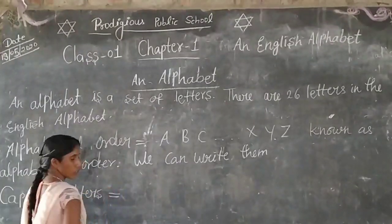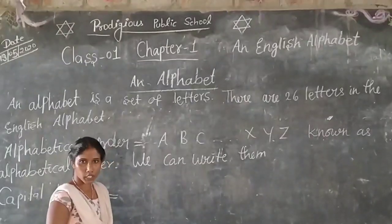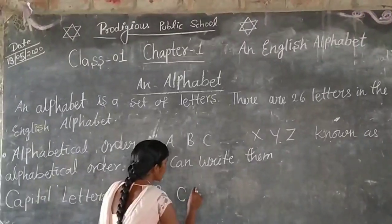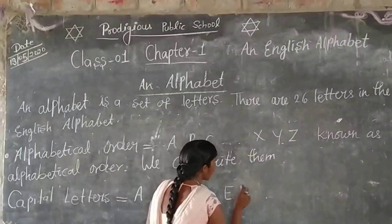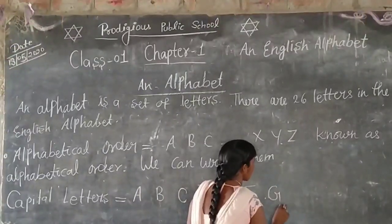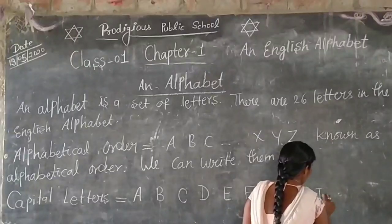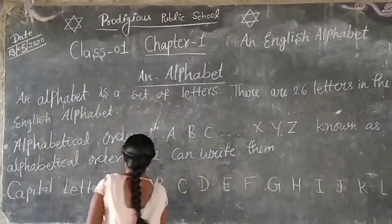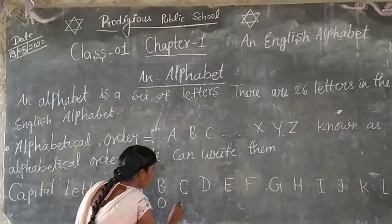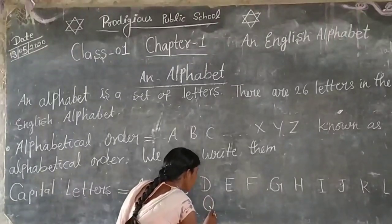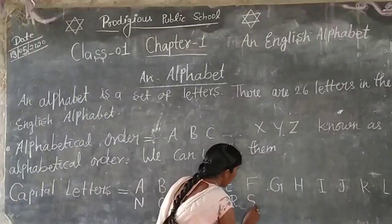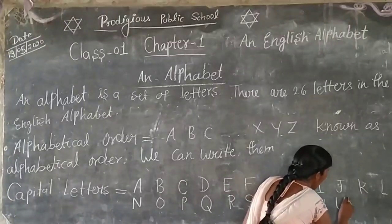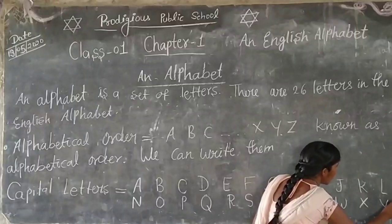Capital letters. बच्चों, आप सभी को capital letters पता होगा? Now we start. A, B, C, D, E, F, G, H, I, J, K, L, M, N, O, P, Q, R, S, T, U, V, W, X, Y, Z.